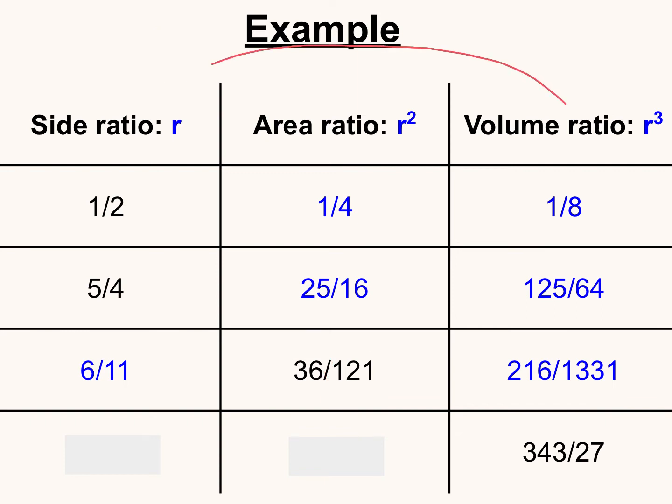And then finally, if I'm given the volume ratio, I want to go back to the side ratio first. We undo the cube by taking the cube root of whatever that volume ratio was. So in other words, what number times itself three times is 343, and what number times itself three times is 27. Your calculator can perform that operation. On the next slide, I'll show you where to access that on most calculators. But the cube root of 343 over 27 gives us 7 thirds, or 7 over 3. And then recall that we square that side ratio to find the area ratio.